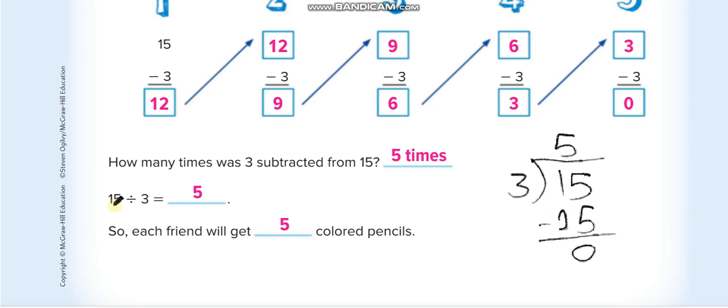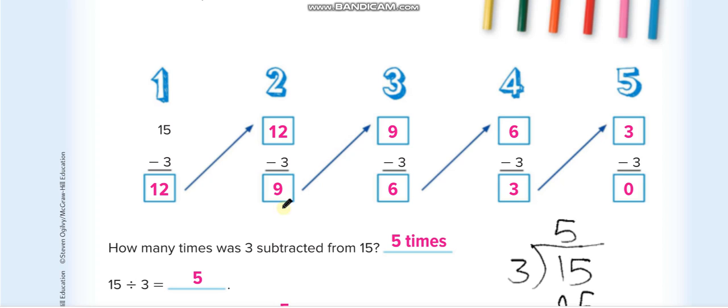But how you solve the division problem while using subtraction? In this way, you have to keep on subtracting 3 from 15 until you get 0. And at the end, we will count how many times we subtract it.